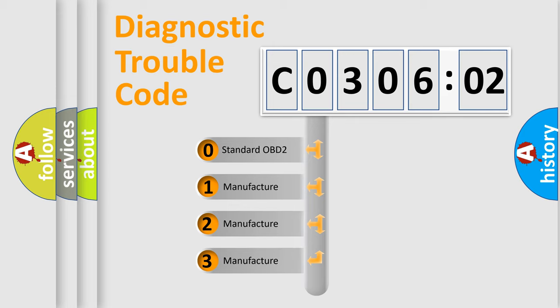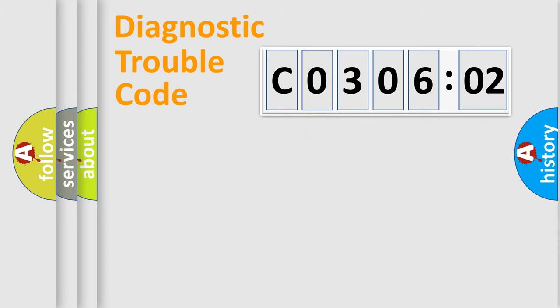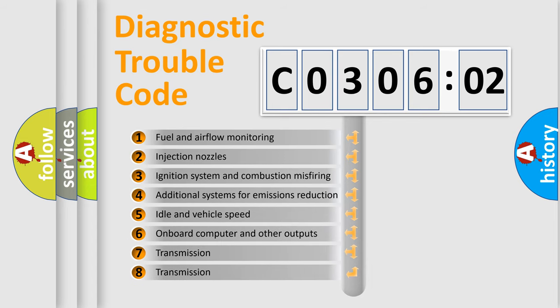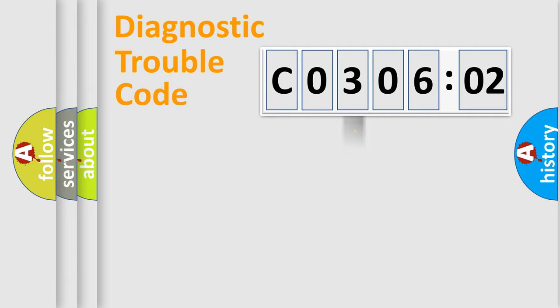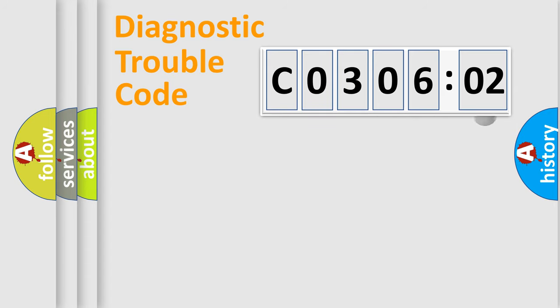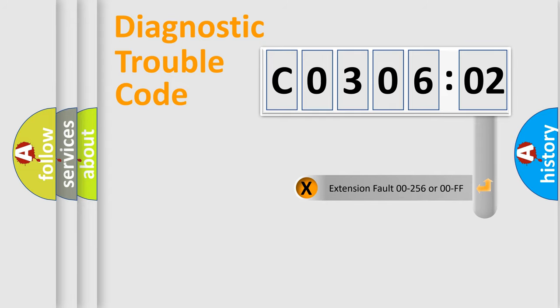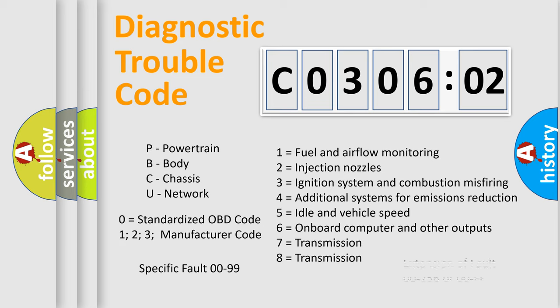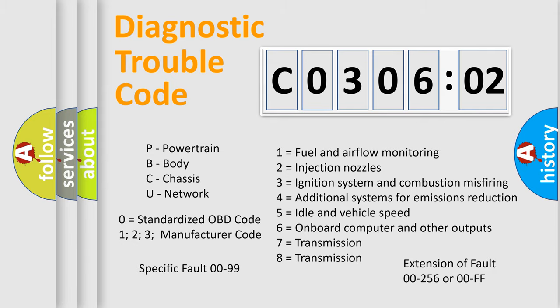If the second character is expressed as zero, it is a standardized error. In the case of numbers 1, 2, or 3, it is a manufacturer-specific error expression. The third character specifies a subset of errors — this distribution is valid only for the standardized DTC code. Only the last two characters define the specific fault of the group. The add-on to the error code serves to specify the status in more detail, for example, a short to ground. Note that such a division is valid only if the second character is expressed by the number zero.